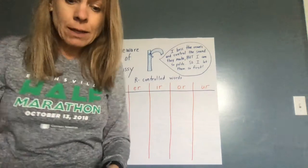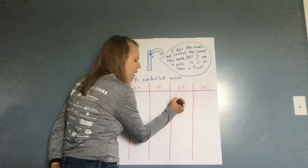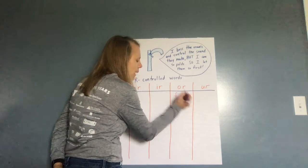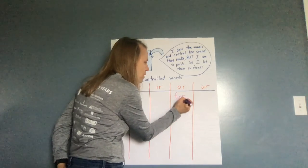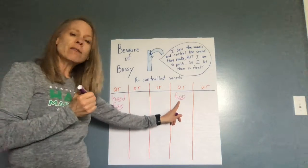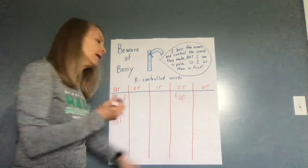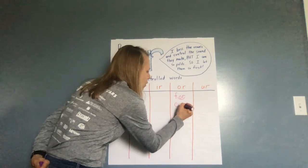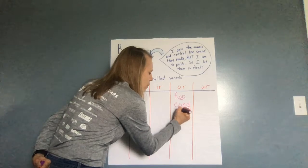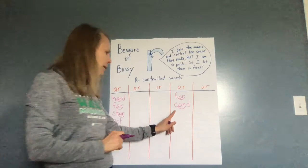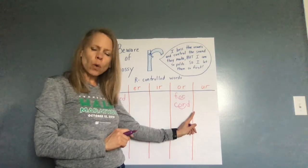Some words that do this are like the word 'for' — F, O, R. I see the vowel O, there's an R behind it, so I know these two are going to go together. When I sound it out: OR. What is this word? For. If I have C, O, R, D — there's the O, there's an R behind it so I know it's going to go together. Say the sounds with me: C, OR, D. What is it? Cord.